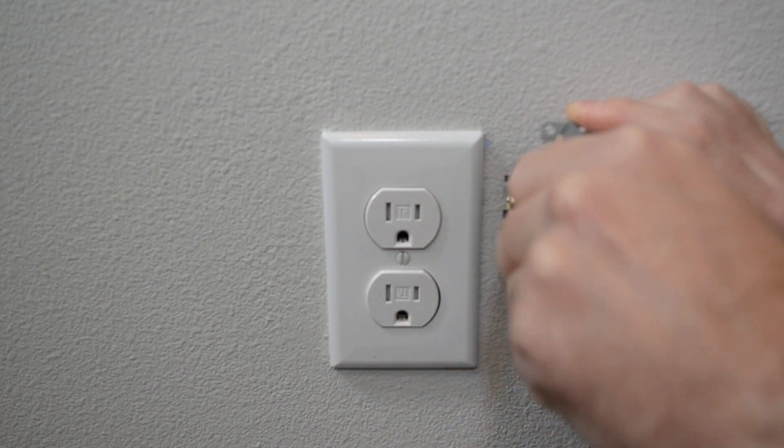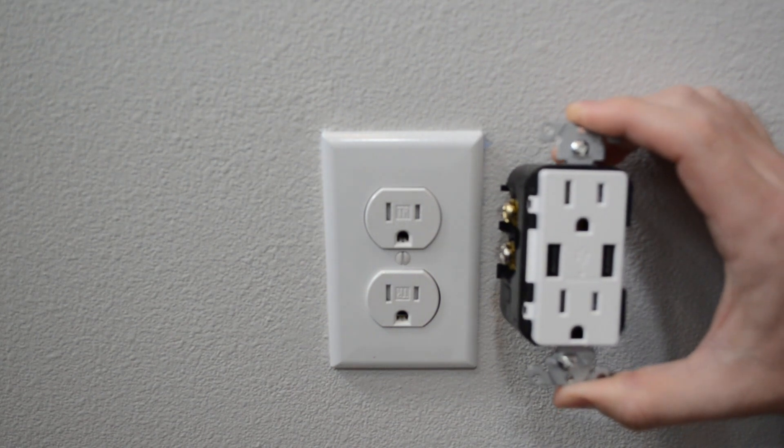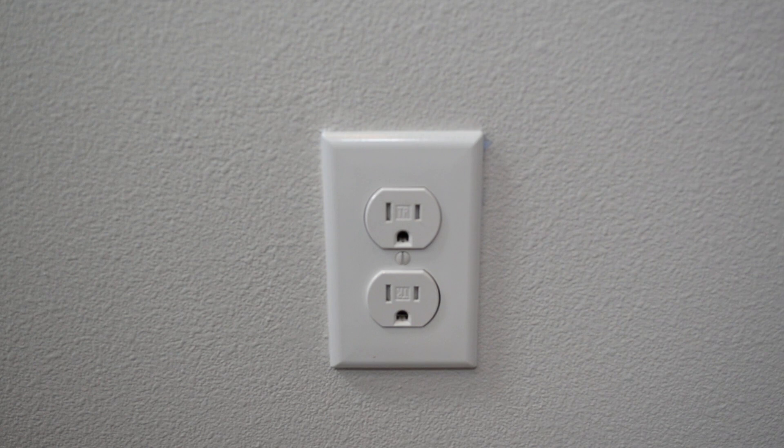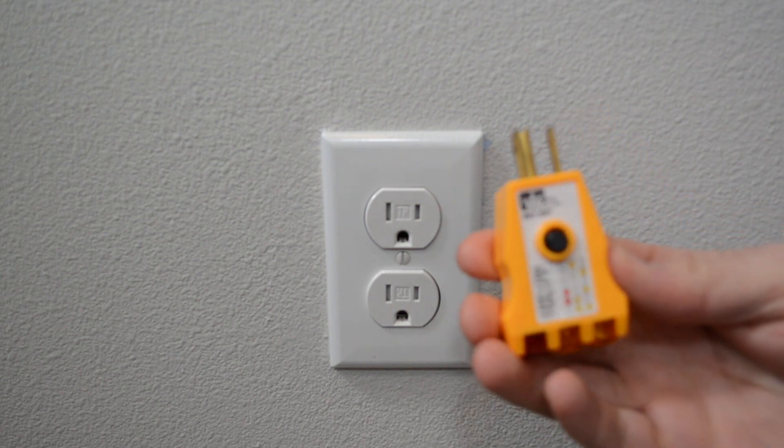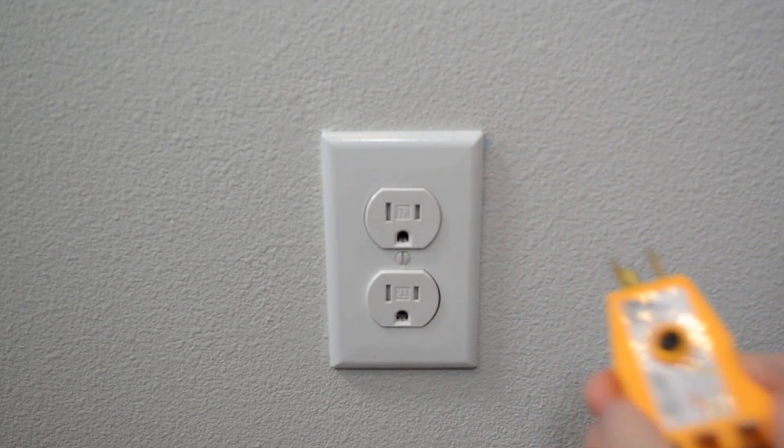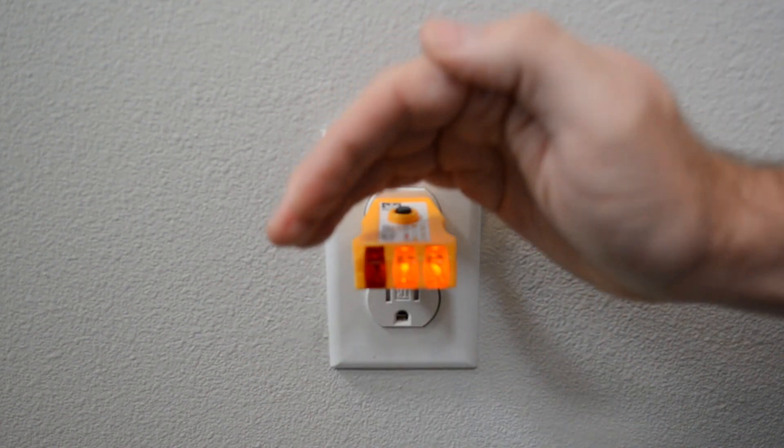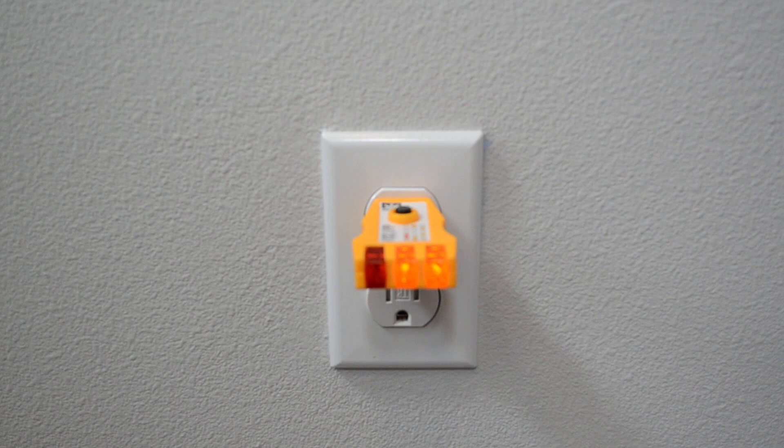Step one is we have to turn off the breaker. In order to find out that we have the right breaker, I have an outlet tester. Plug that into the outlet and it will light up. Next we will go to the breaker panel and turn off the breaker for that outlet.